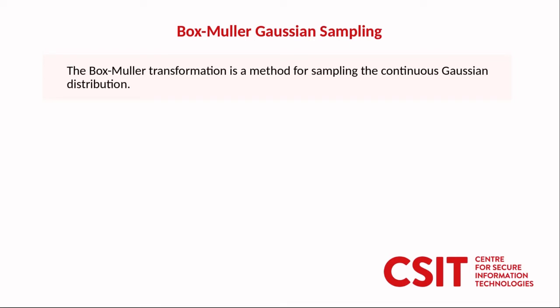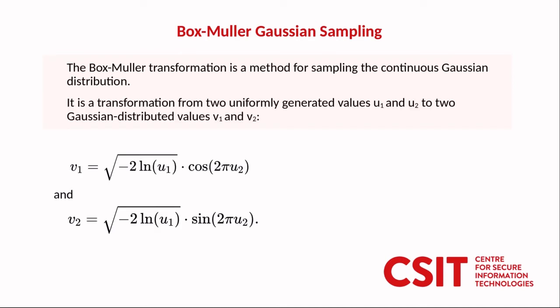We choose as the continuous Gaussian sampling method the Box-Muller transformation which is a transformation from two uniformly generated values U1 and U2 to two Gaussian distributed values V1 and V2. The first factor and common term in both expressions is a complete reversal of the Gaussian function and the second factors are the cos and sine of the second uniform value multiplied by 2 pi. And this gives us two values which are distributed according to a Gaussian distribution.